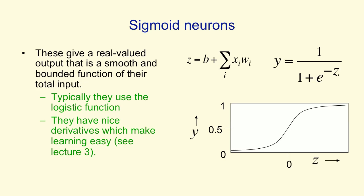When the total input's 0, e to the minus 0 is 1, so the output is half. And the nice thing about a sigmoid is it has smooth derivatives. The derivatives change continuously, and so they're nicely behaved, and they make it easy to do learning, as we'll see in lecture 3.